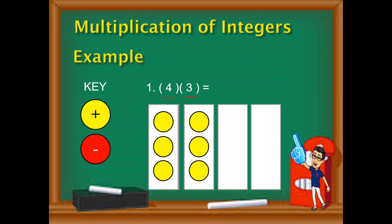Tatlong yellow chips, kasi yellow means positive. So lagay natin 1, 2, 3, and 4. So apat na group na tigtatlo yellow chips because 3 is positive. Then after that, you will just count the number of chips inside the bawat group. So bilangin natin 1, 2, 3, 4, 5, 6, 7, 8, 9, 10, 11, 12. And that's 12 yellow chips. And yellow means positive. Therefore, the answer when we multiply 4 times 3 is 12.